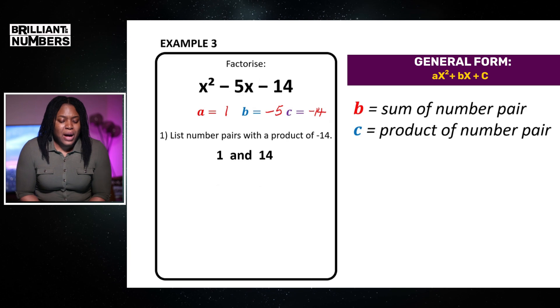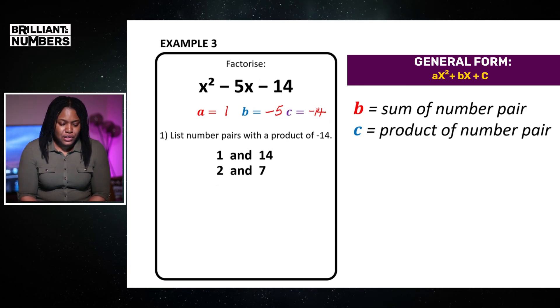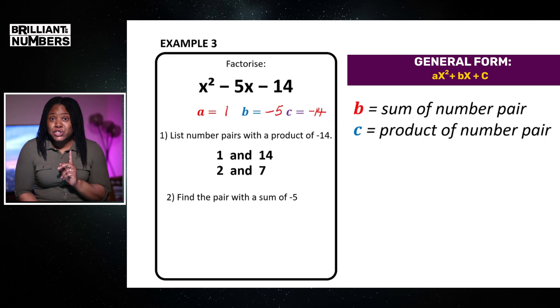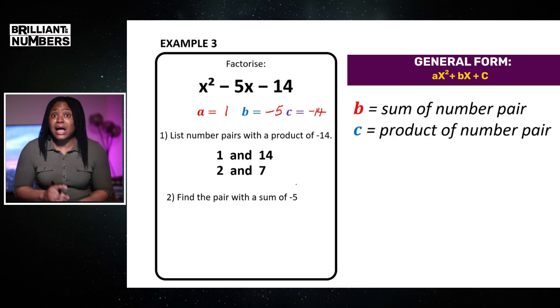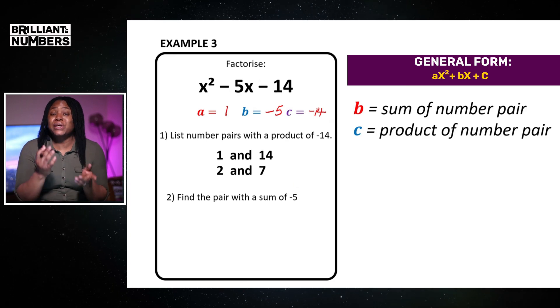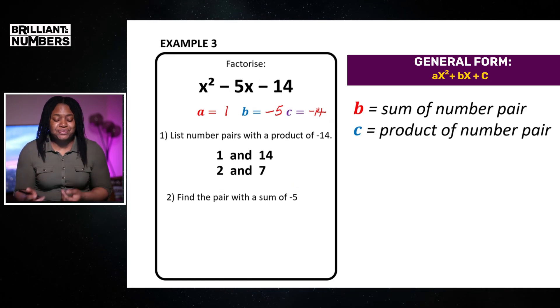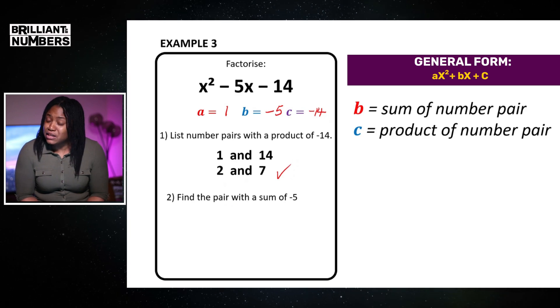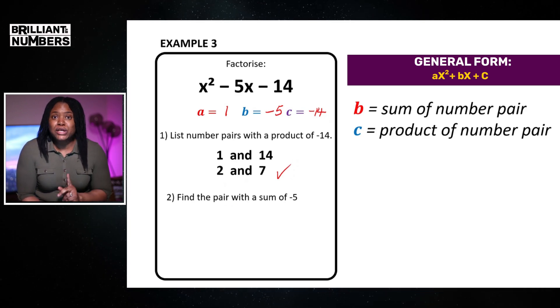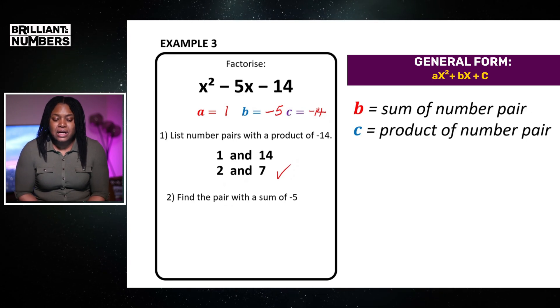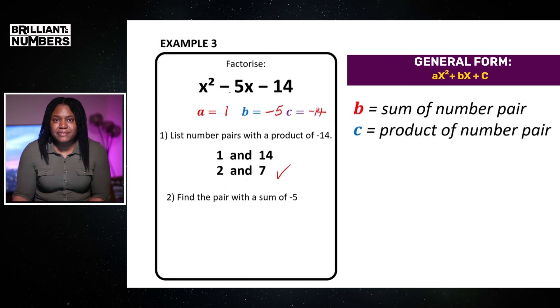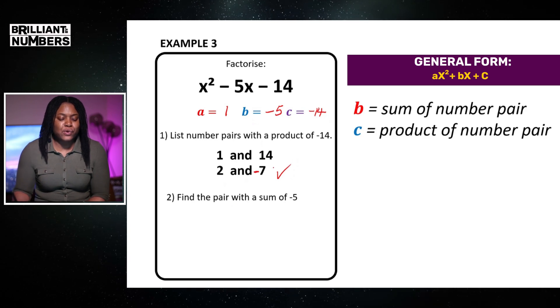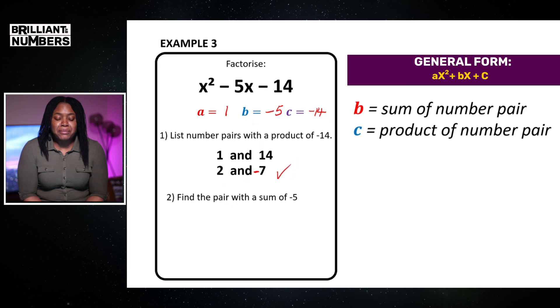So, I've got 1 and 14, 2 and 7. Now, if you notice this here, I want my number pair to have a sum of minus 5. I hope you're getting into the pattern to recognize that we want the pair that is 5 apart. So, 2 and 7 are 5 apart. So, we know that our pair is going to include these numbers. We then need to focus on which one of these needs to be negative. Now, because I want my answer to be 5, this tells me that my larger number has to be the negative number. So, therefore, my pair will be 2 and minus 7.